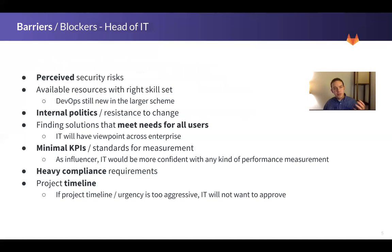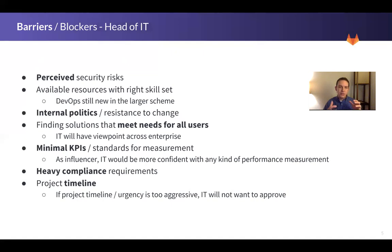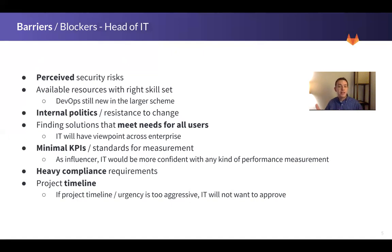What are some barriers or blockers for a head of IT to adopting a new technology like GitLab? First, there could be perceived security risks. There's always a risk with adopting any new tool. Even though GitLab is extremely stable and secure, the perceived notion that anything new has security risks — and it does — means any new tool needs to be understood in terms of how it fits into the organization so that risk can be mitigated. That perceived risk can be a huge blocker.